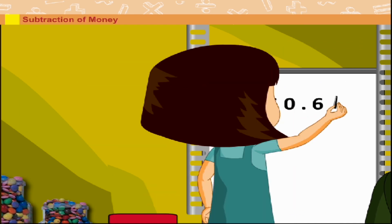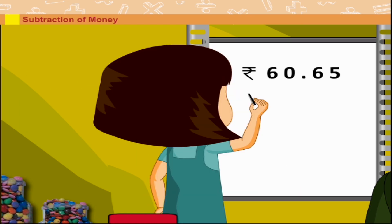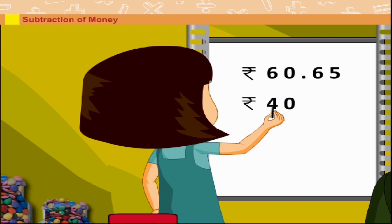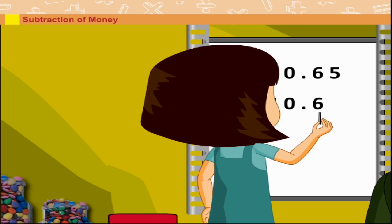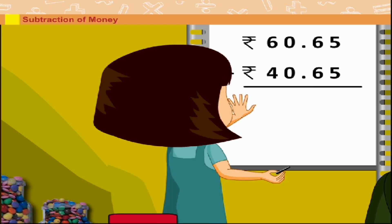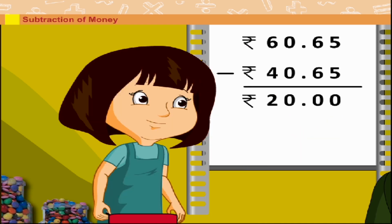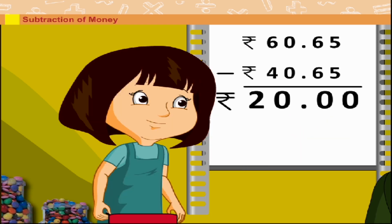Neha subtracts Rs. 40.65 from Rs. 60.65 and gets Rs. 20.00. That means she paid Rs. 20.00 for 10 candies.